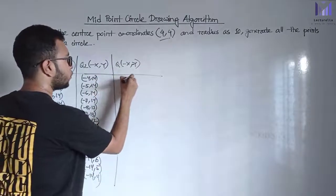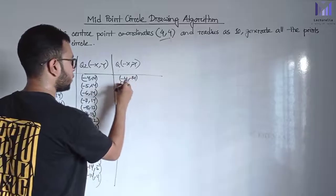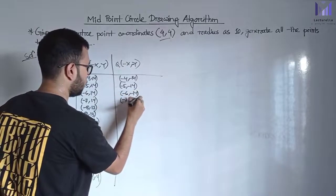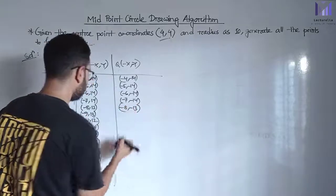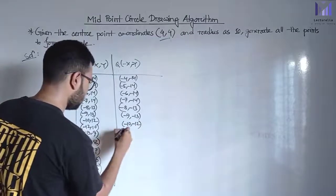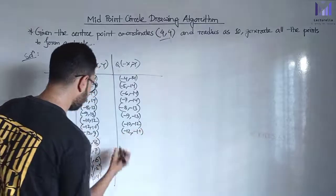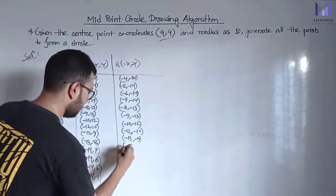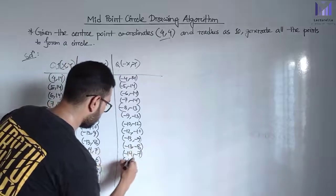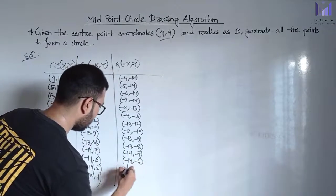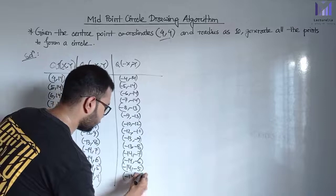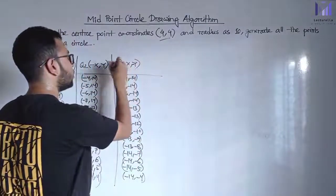Q3 coordinates (both negative): minus 4 minus 14, minus 5 minus 14, minus 6 minus 14, minus 7 minus 14, minus 8 minus 13, minus 9 minus 13, minus 10 minus 12, minus 12 minus 10, minus 13 minus 9, minus 13 minus 8, minus 14 minus 7, minus 14 minus 6, minus 14 minus 5, minus 14 minus 4.